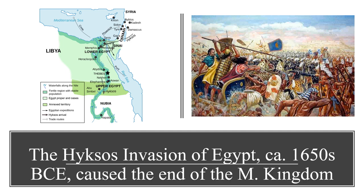Around the 1650s BCE, a Near Eastern people called the Hyksos invaded Egypt, bringing an end to the Middle Kingdom. The Hyksos were able to defeat the Egyptians because they had better military technology, specifically chariots, which were very important in ancient warfare. The Hyksos also relied more on bows and arrows and javelins than the ancient Egyptians, who generally preferred melee weapons like spears and swords. Both the Egyptians and the Hyksos would have been using bronze weapons, as this is still the Bronze Age.